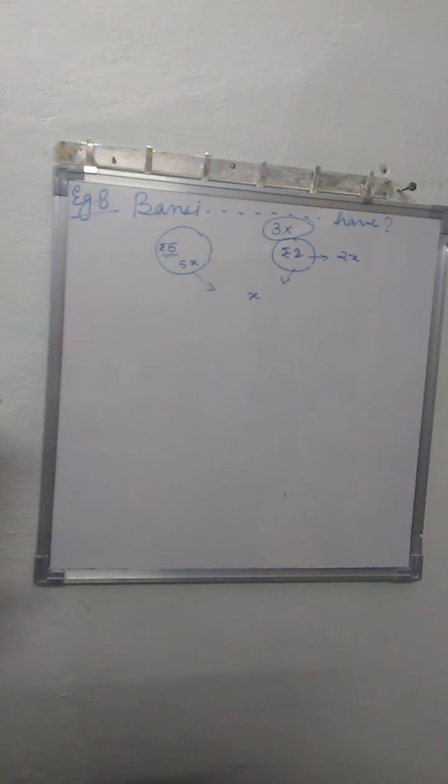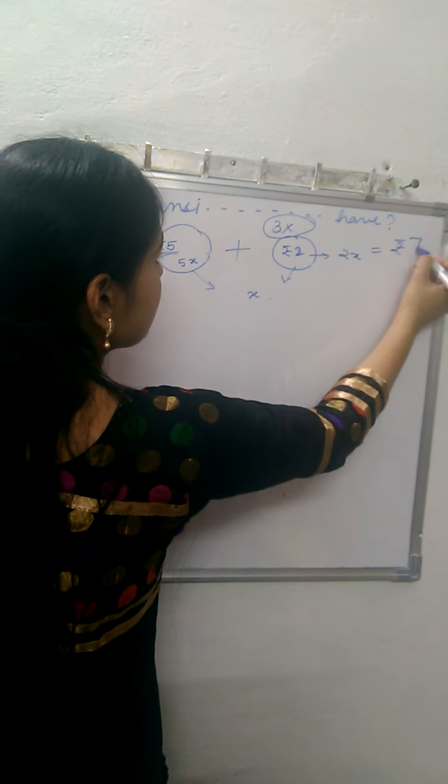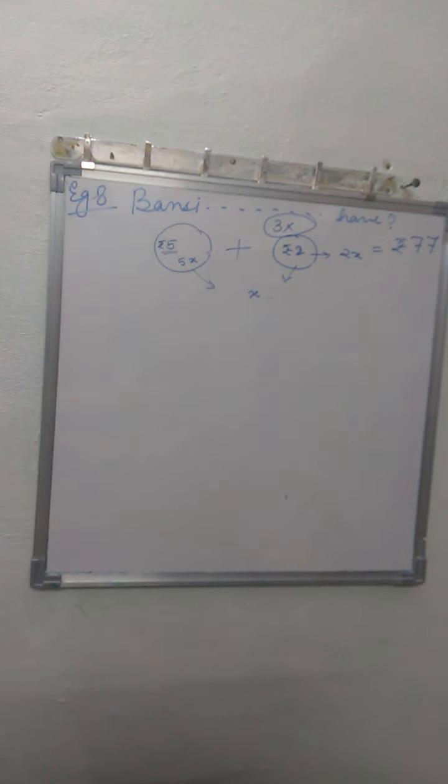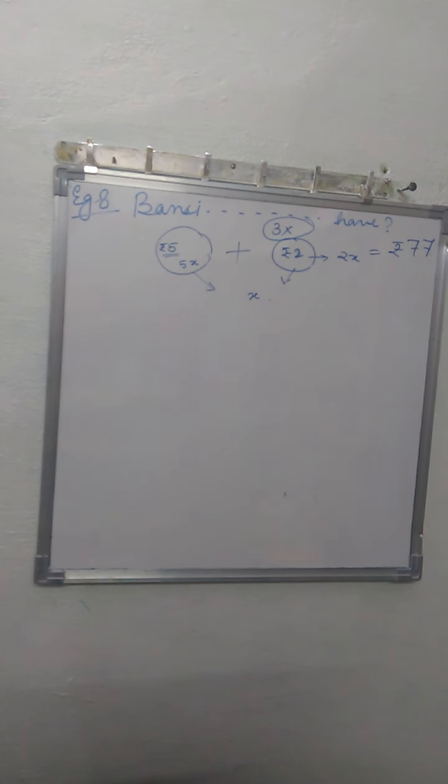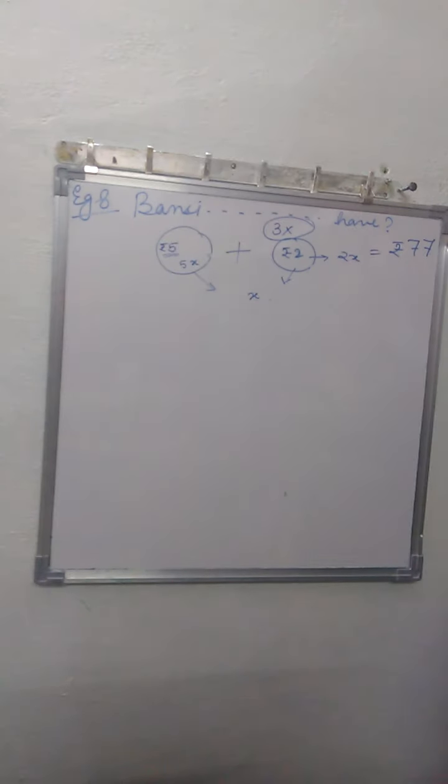Now, if he has in all a sum of rupees 77, that means if we add these together, we should get rupees 77. So then, how many 5 rupee coins and how many 2 rupee coins does Bunsi have? This is your mathematical equation.